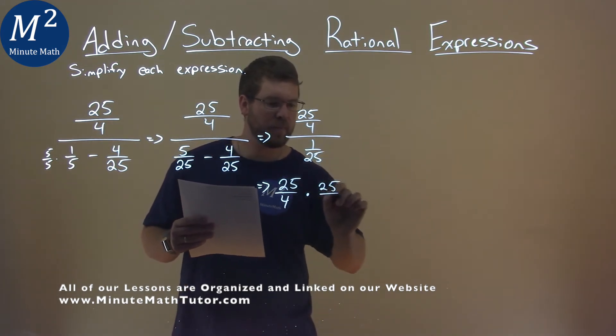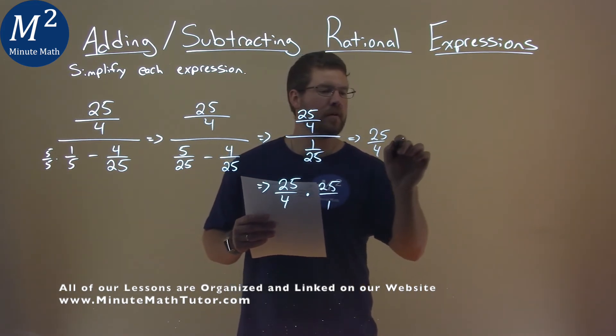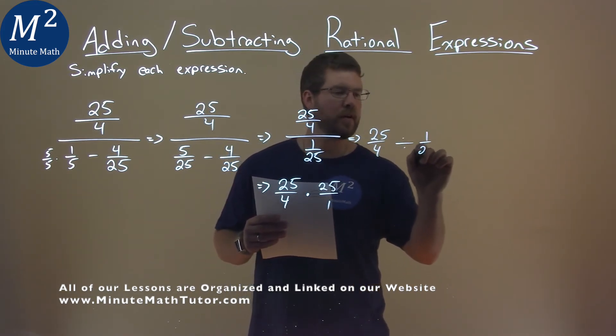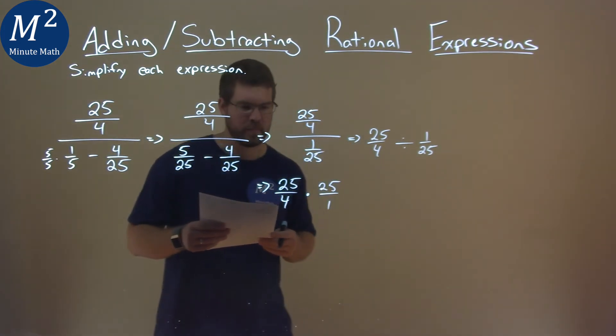And if it's easier for you to see, 25 over 4 divided by 1 over 25—you can see that flip here with multiplication. Now it's not too bad.